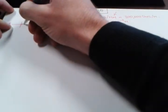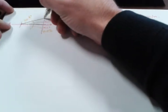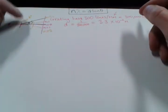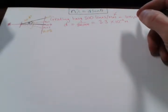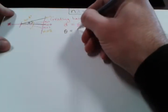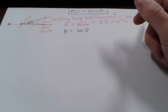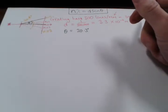So the average angle then, because we're going to need the angle between the second order image and the straight through, which is theta - it's going to be half of this in order to get the average angle between the two. So theta here is going to be 20.3 degrees in order to do the calculation on this.